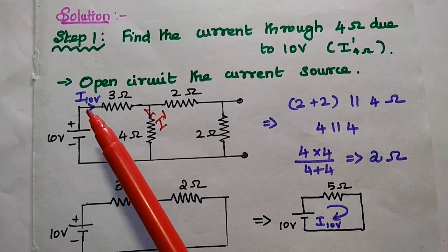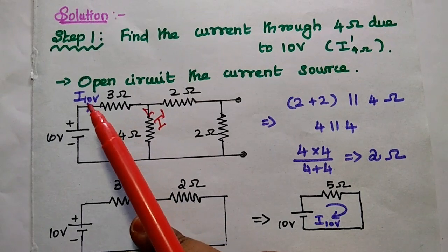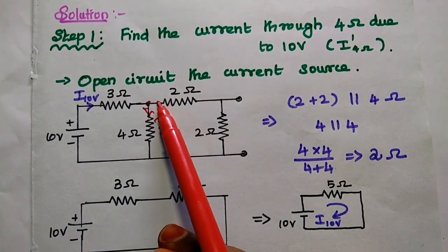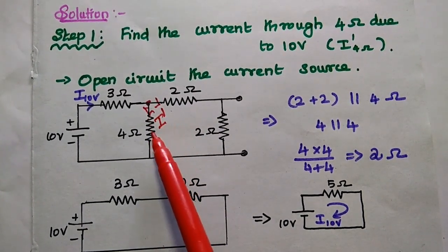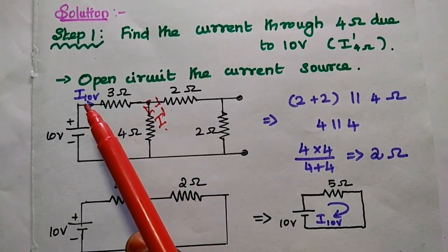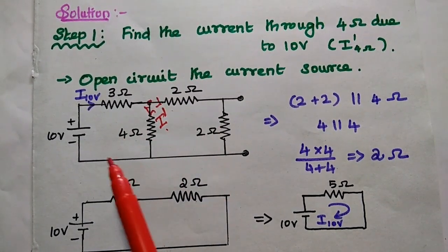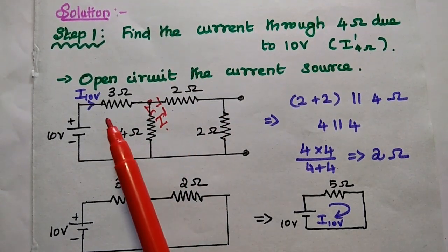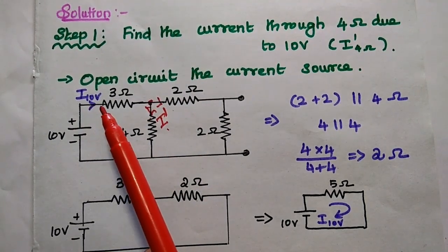The total current from this 10 volt source is I_10, which is the total current flowing through the circuit. At this point, the current is getting divided between these two branches. We are going to use the current division rule. For that, we need the total current in this circuit, so we are going to simplify the resistance values to find the total equivalent resistance to get the value of I_10.